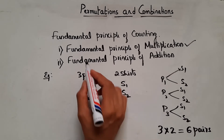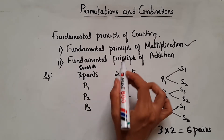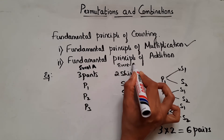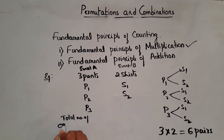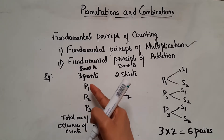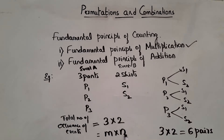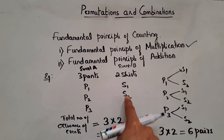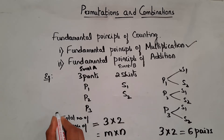So in general, if I take choosing a pant as event A and choosing a shirt as event B, we can say the total number of occurrences of the events is equal to M into N, where an event can occur in M different ways following which another event can occur in N different ways. So in this case we have 3 into 2. So this is the fundamental principle of multiplication.